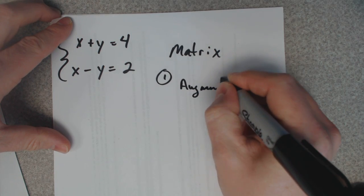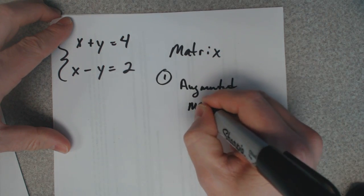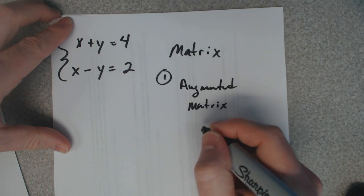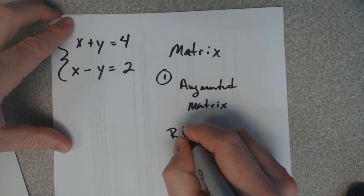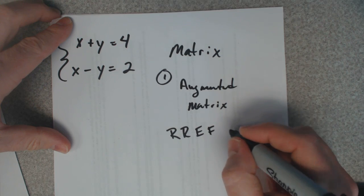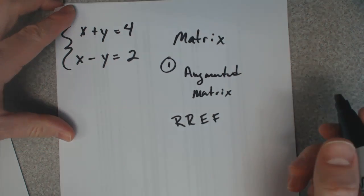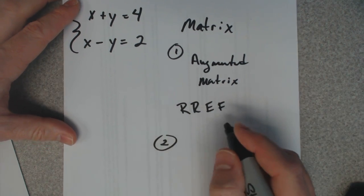You put that augmented matrix into RREF form. The second way you can do this using the matrix is what's called the inverse method.